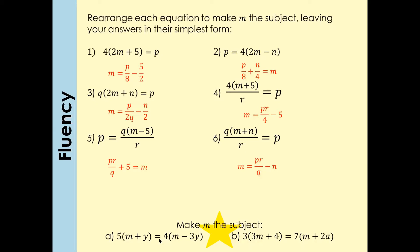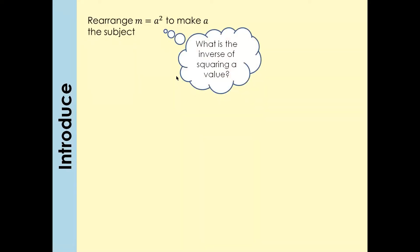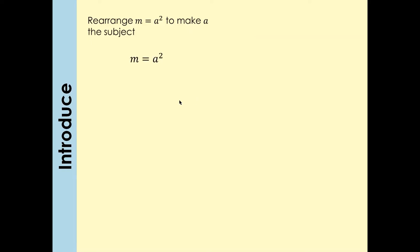For these ones you have to expand the brackets first: 5m plus 5y equals 4m minus 12y. Then collect the like terms and take it from there. In this question we have a square — m equals a squared. To make a the subject, you need to get rid of the square by taking the square root, since the inverse of squaring is the square root. Square root both sides, so a equals the square root of m.